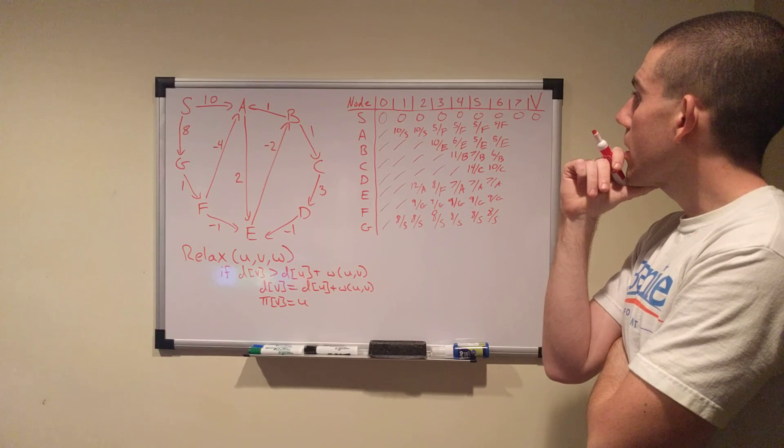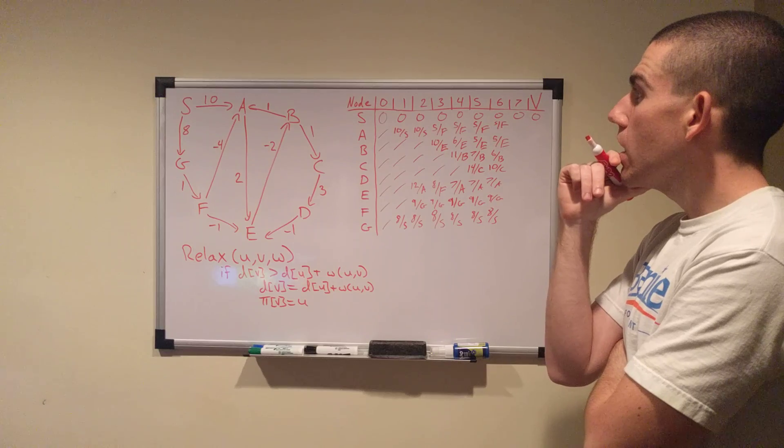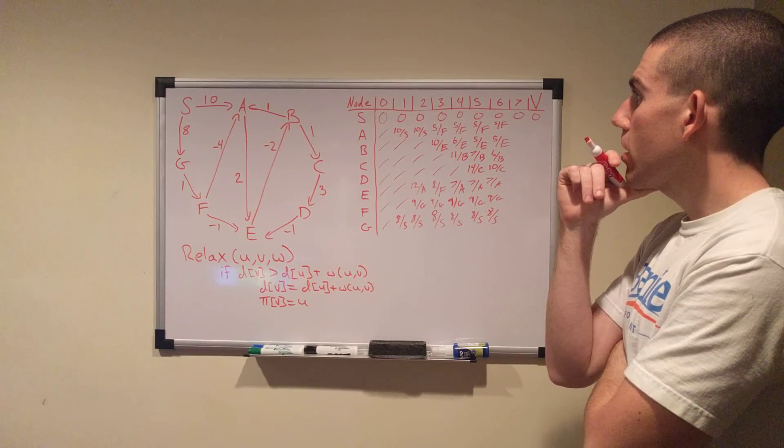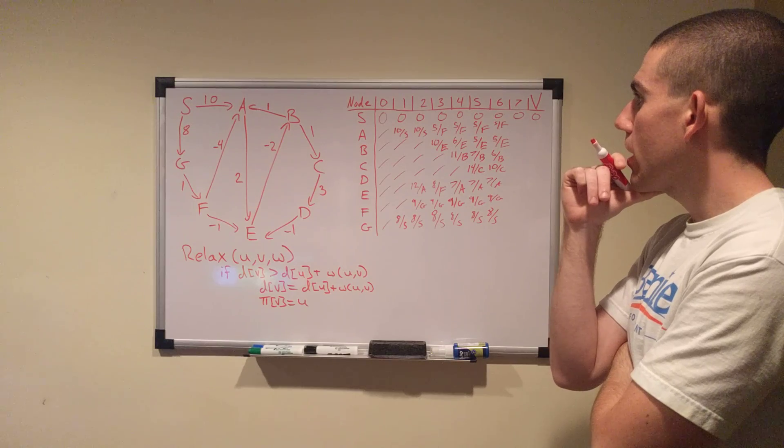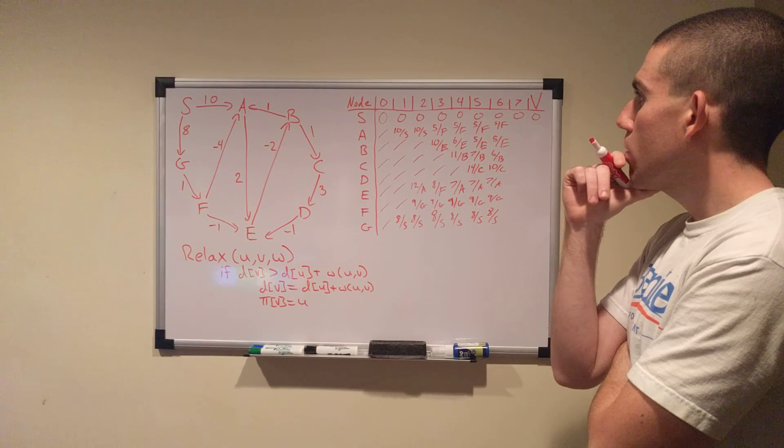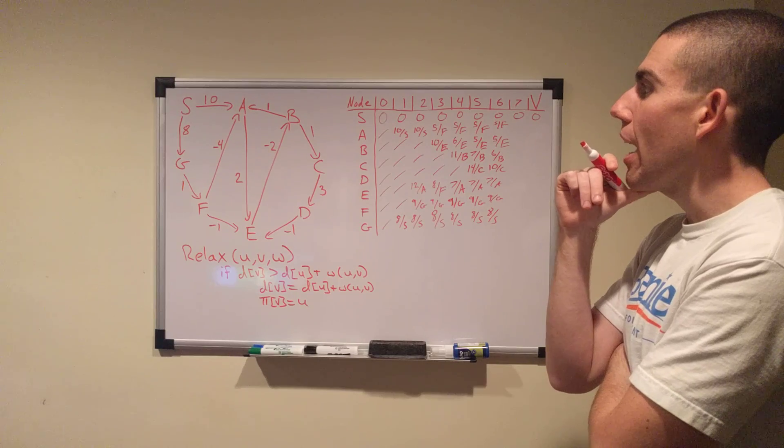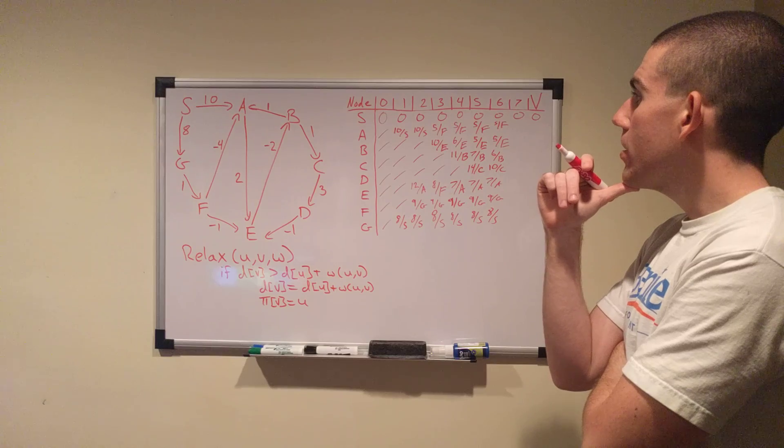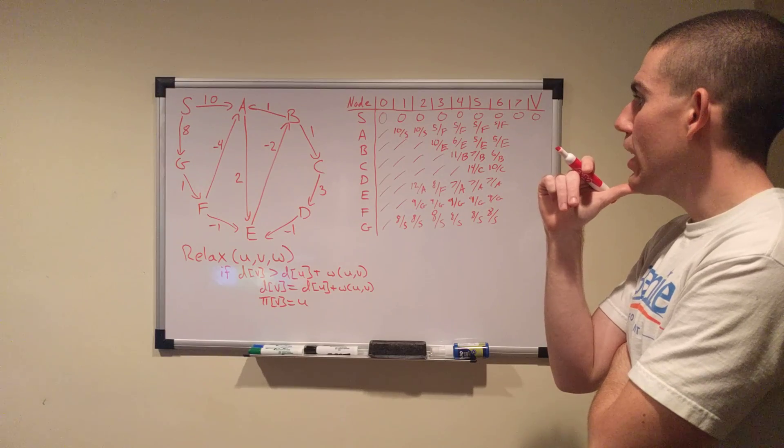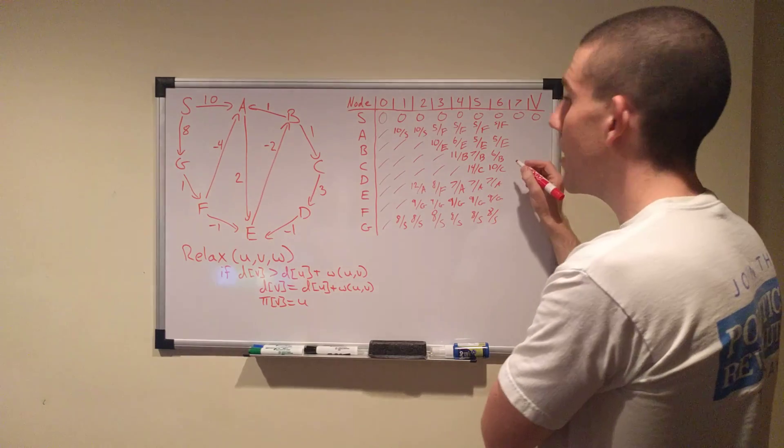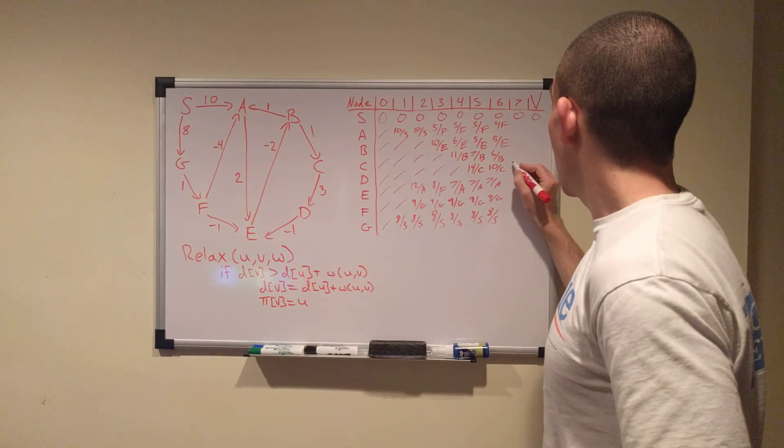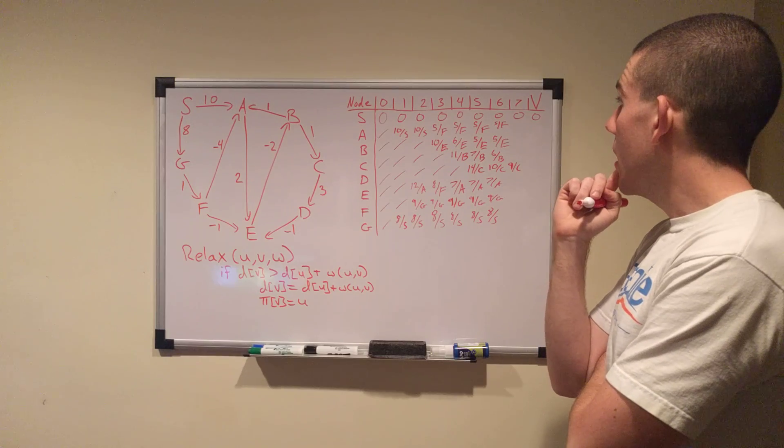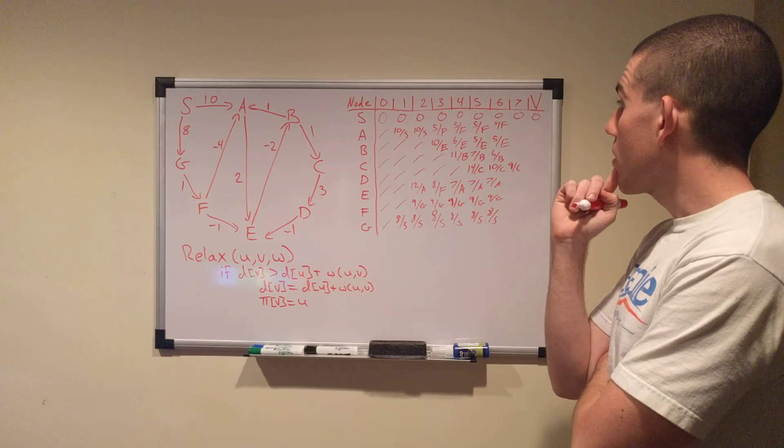We relax S and nothing changes. We relax A and nothing changes again. We relax B. B has a cost of 5, gets to C at a cost of 6, gets to A at a cost of 6. Nothing changes because those two values are either equal to or greater than the values we currently have. And that's B. C has a cost of 6 now, which means we can get to D at a cost of 9. D is ever-changing. 9 from C. From 14 to 10 to 9. D is very dynamic.